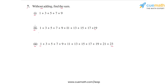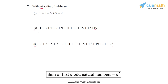What we are going to use to solve this problem is the fact that the sum of the first n odd natural numbers is equal to n squared. We are going to directly use this fact, and that's why we can solve each of these parts without carrying out the actual addition.